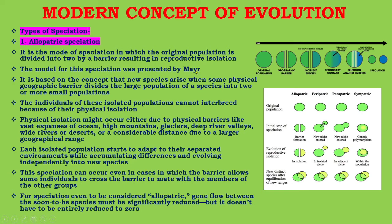Allopatric speciation is based on the concept that new species arise when some physical geographic barrier divides a large population into two or more small populations. The individuals of these isolated populations cannot interbreed because of their physical isolation. Physical isolation might occur due to vast expanses of ocean, high mountains, glaciers, deep river valleys, wide rivers, deserts, or considerable distance across a large geographical range. Each isolated population starts to adapt to its separated environment while accumulating differences and evolving independently into new species.